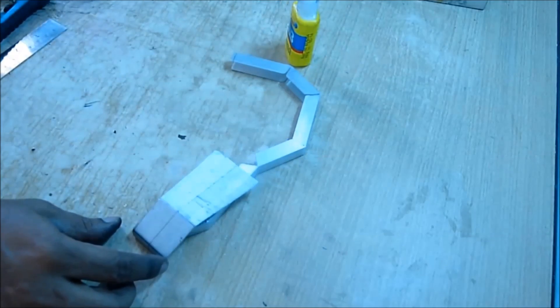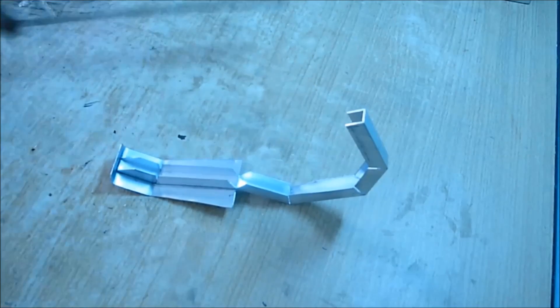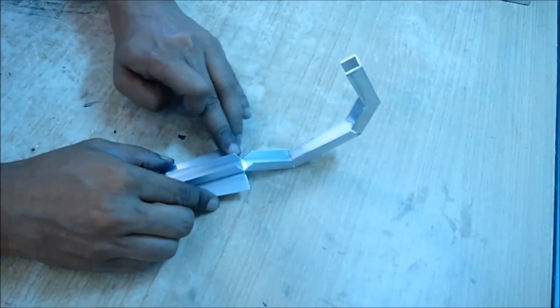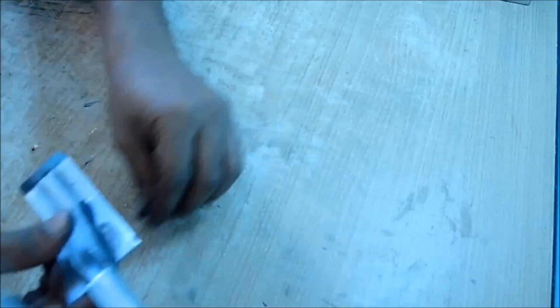Cut some metal pieces like this and glue it with the frame to make the nose. Use Fabi Quick to glue first, and then use M seal to fix it firmly with the main frame.